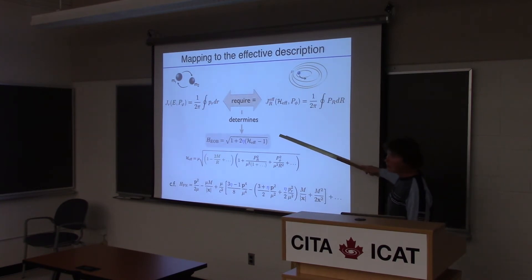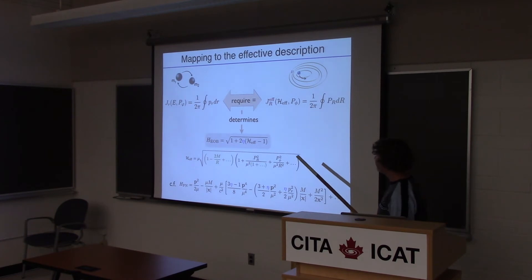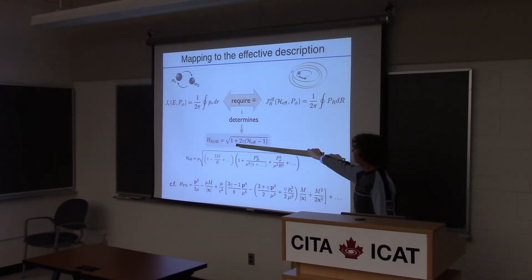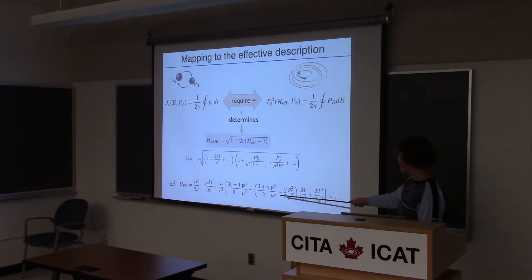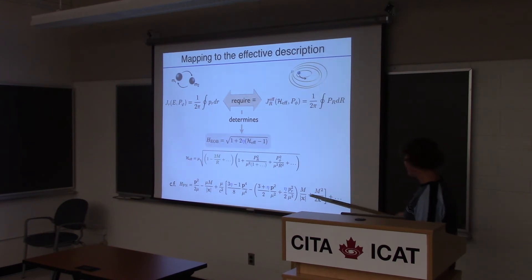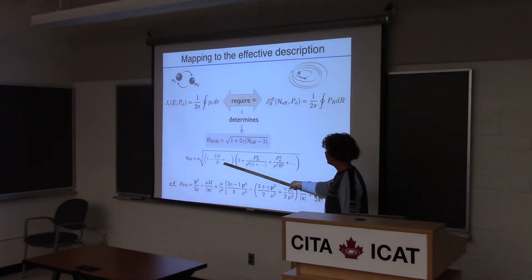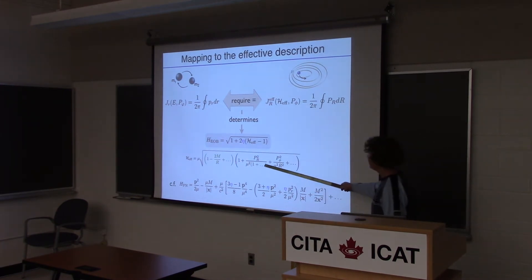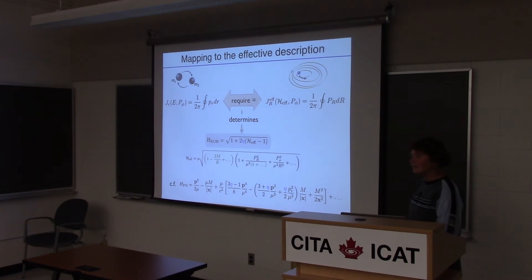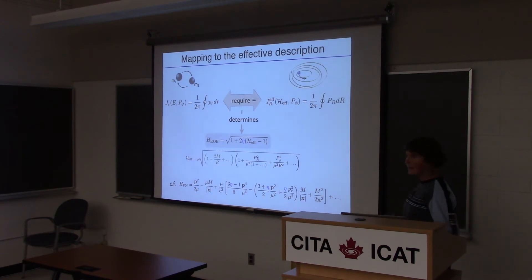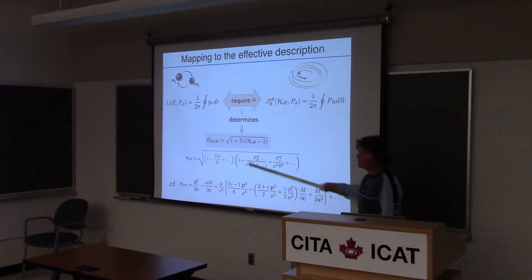That's already a lot of progress — we know how to relate the energies. Now we still have to determine the metric potentials. One can just post-Newtonian expand this EOB Hamiltonian and compare to the ugly-looking post-Newtonian Hamiltonian. What one finds is that at the same order, the effective Hamiltonian looks very simple with no correction at that order. This is especially true at higher orders, when post-Newtonian expressions can take up pages of equations, whereas the EOB Hamiltonian just picks up a few more terms in the metric potentials.